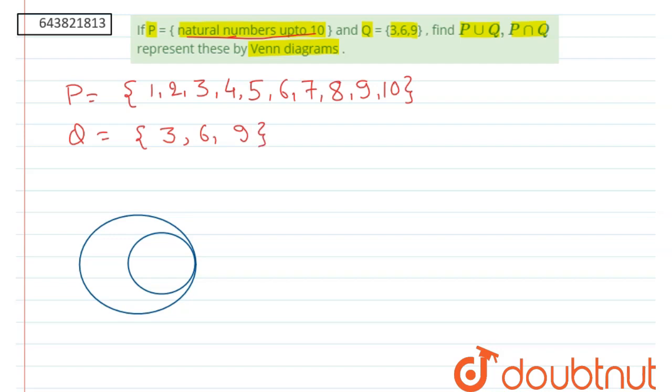It is clear that set Q is a subset of set P. So from here we can write P union Q that will be set P itself, because Q is a subset of P. So it will be 1, 2, 3, 4, 5, 6, 7, 8, 9, 10.